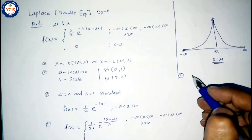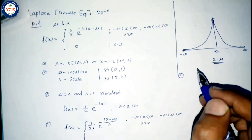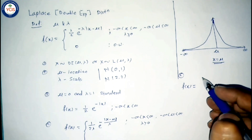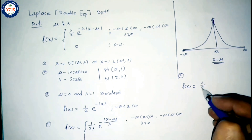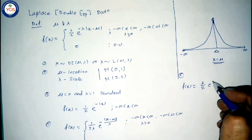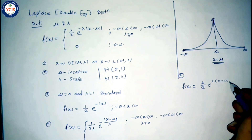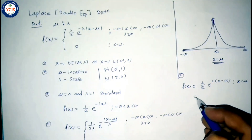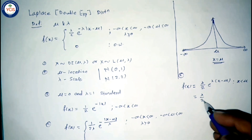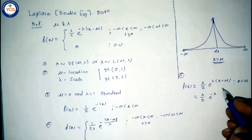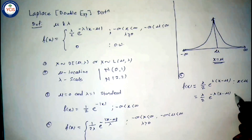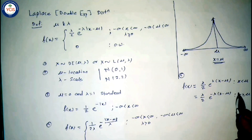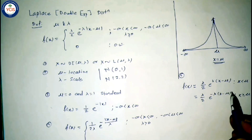The PDF of the double exponential distribution can also be written in a separation (piecewise) form: f(x) = (lambda/2) * e raised to lambda*(x minus mu), for x less than mu; and f(x) = (lambda/2) * e raised to minus lambda*(x minus mu), for x greater than or equal to mu.